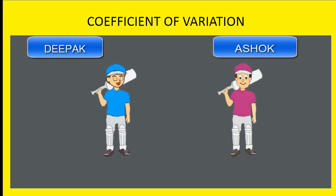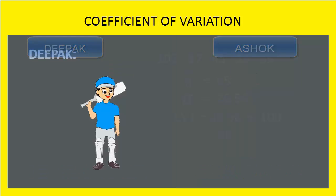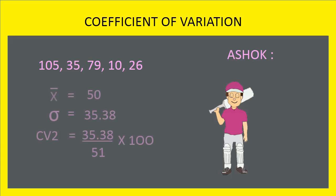Consider the runs scored by two cricket players in five different matches. Here, the coefficient of variation is 40.86%. Here, the coefficient of variation is 69.37%.